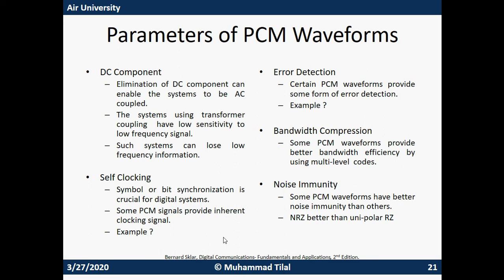There are certain parameters of PCM waveforms that you need to cover yourself from the textbook: DC component, self-clocking, error detection, bandwidth compression, and noise immunity. Some PCM waveforms provide self-clocking so no external clock is needed for synchronization; some have a DC component or not; some are better for error detection; some are bandwidth efficient; and some have better noise immunity. You also need to study the spectral attributes of PCM waveforms.